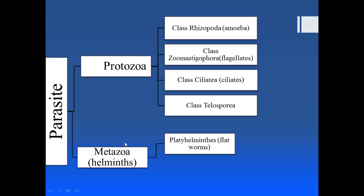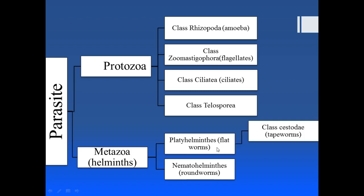Similarly, we divided the metazoa on the basis of their body shape or structure into flatworms — the Platyhelminthes — and the Nemathelminthes, which are the round ones. The Platyhelminthes or flat ones are again divided into class Cestoda, whose bodies are segmented, and class Trematoda, whose bodies are leaf-like and are also called flukes. So that was the basic classification.